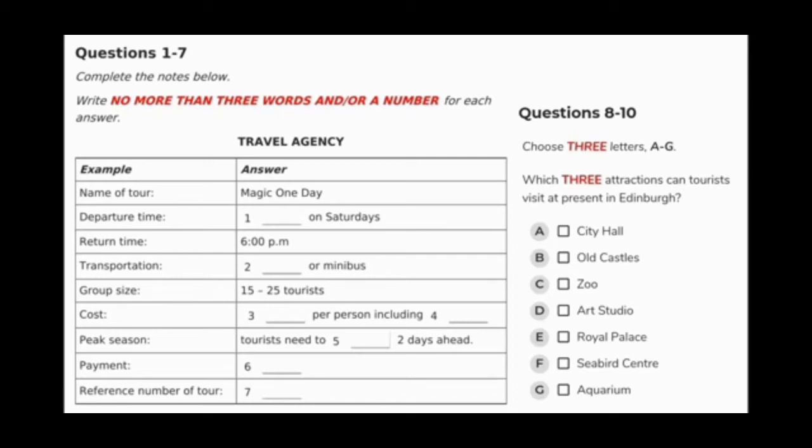Test 2. Instructions. You are going to hear a number of different recordings, and you will have to answer questions on what you hear. There will be time for you to read the instructions and questions, and you will have a chance to check your work. All the recordings will be played once only. The test is in four sections.